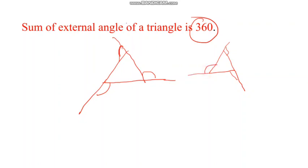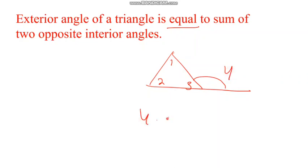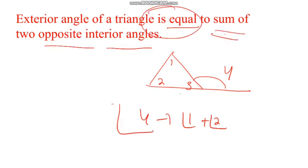Sum of the external angles is equal to 360 degrees. That means there are six external angles. Now the exterior angle property: this is angle 1, angle 2, angle 3, angle 4. Angle 4 is equal to the sum of angle 1 plus angle 2. That means the exterior angle of a triangle is equal to the sum of the two opposite interior angles.